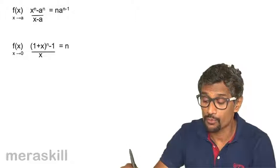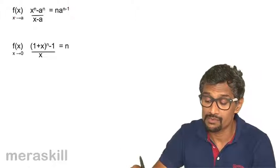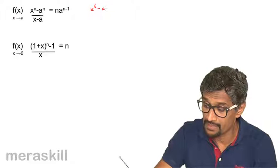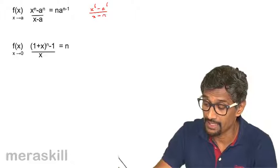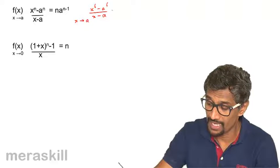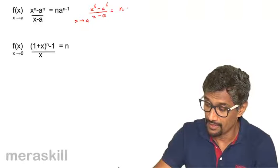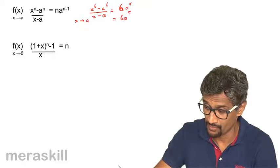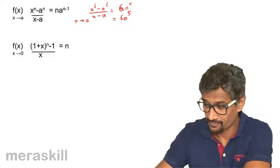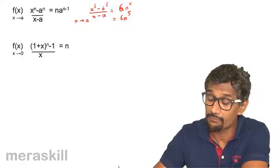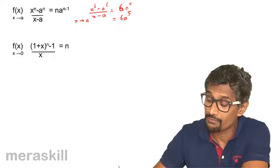Next, the formula: limit of (x^n - a^n) / (x - a) as x → a equals n × a^(n-1). For example, the limit of (x^6 - a^6) / (x - a) as x → a equals 6 × a^5. Remember that both x and a must be raised to the same power, and you divide by (x^1 - a^1).